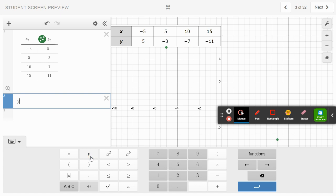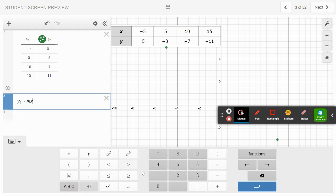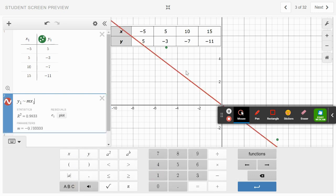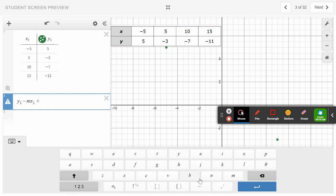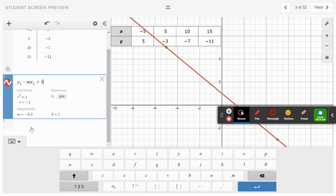Now we have the Desmos calculator provide us with our equation. We choose y and tell it to look at this table. I'm going to say y1 and then use a special sign called the tilde squiggly line. I press the ABC button to find the tilde sign, then choose m for slope and x1 because x1 is in my graph.